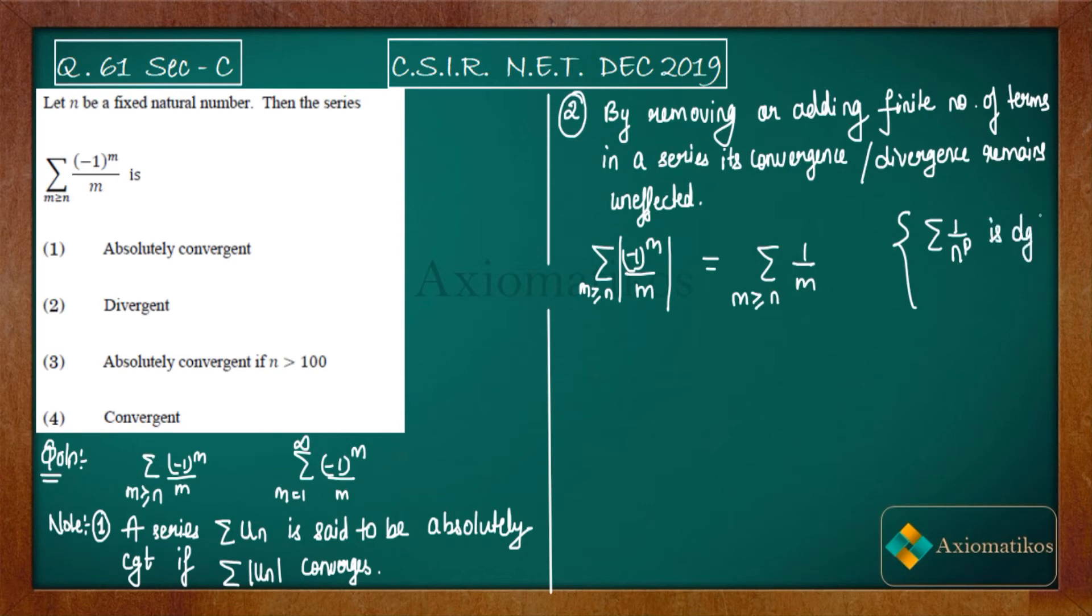It is divergent if p ≤ 1. We know this—it's a p-series test. In your case, p is exactly one, therefore it has to diverge. So it means that your series is not absolutely convergent.